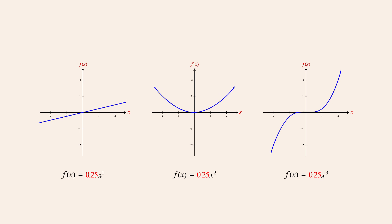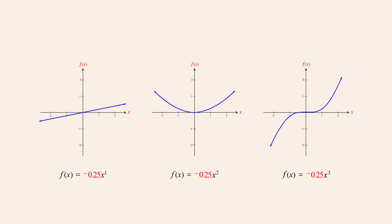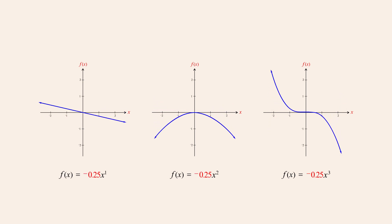If the coefficients are negative, the graphs become reflected across the x-axis. And just as with positive coefficients, larger negative values cause the graphs to stretch vertically.